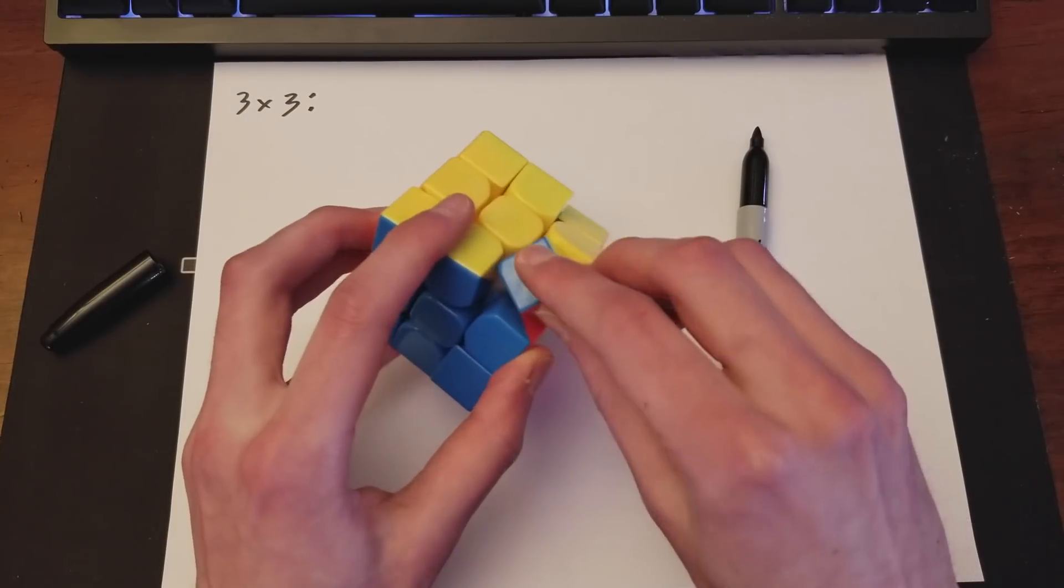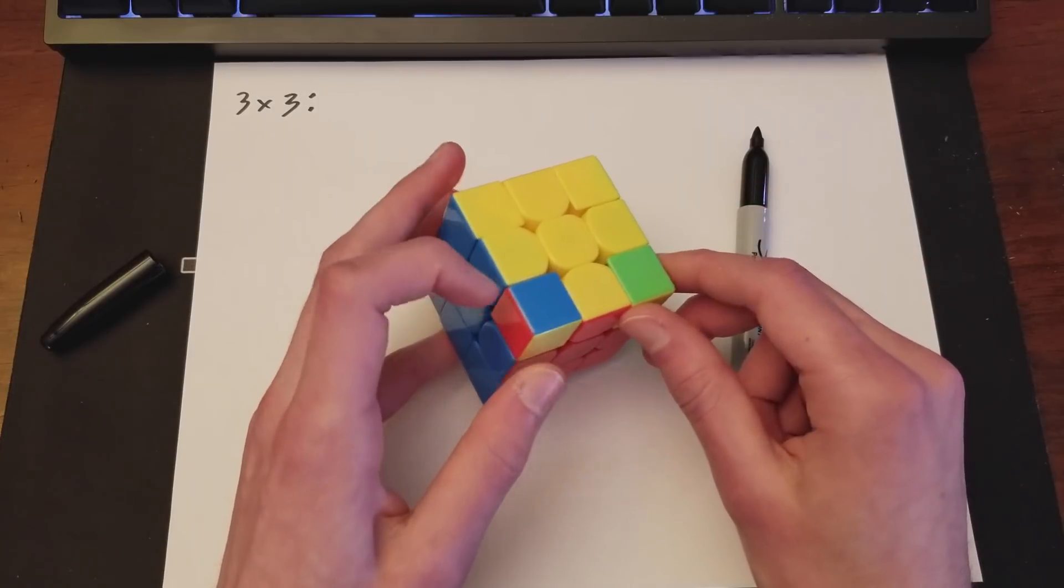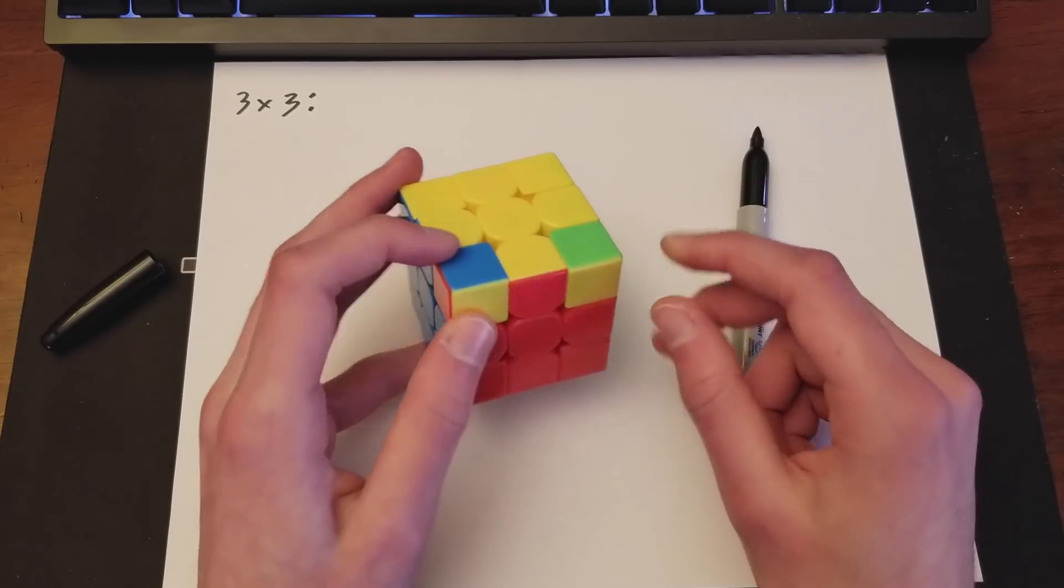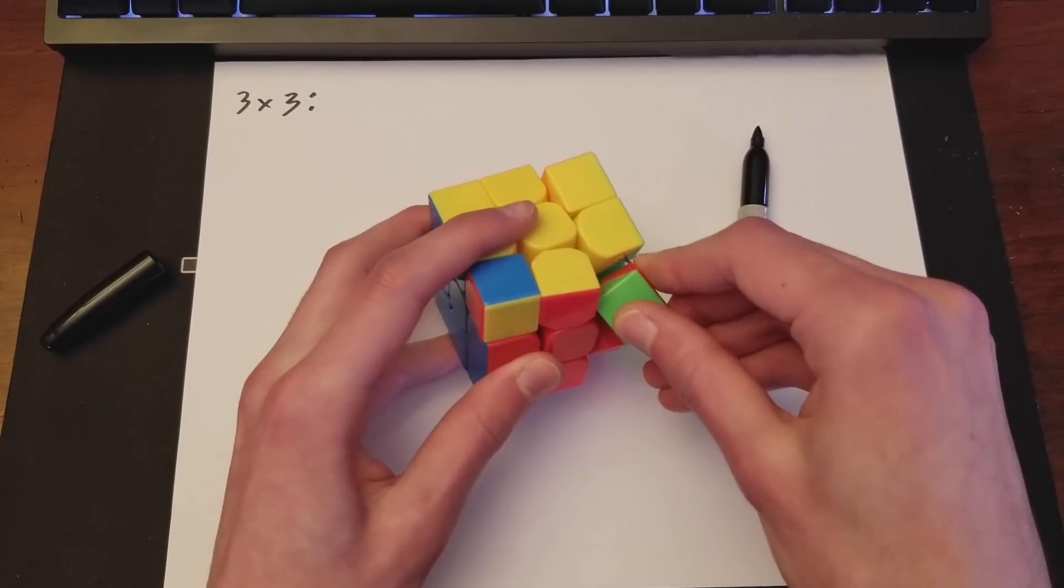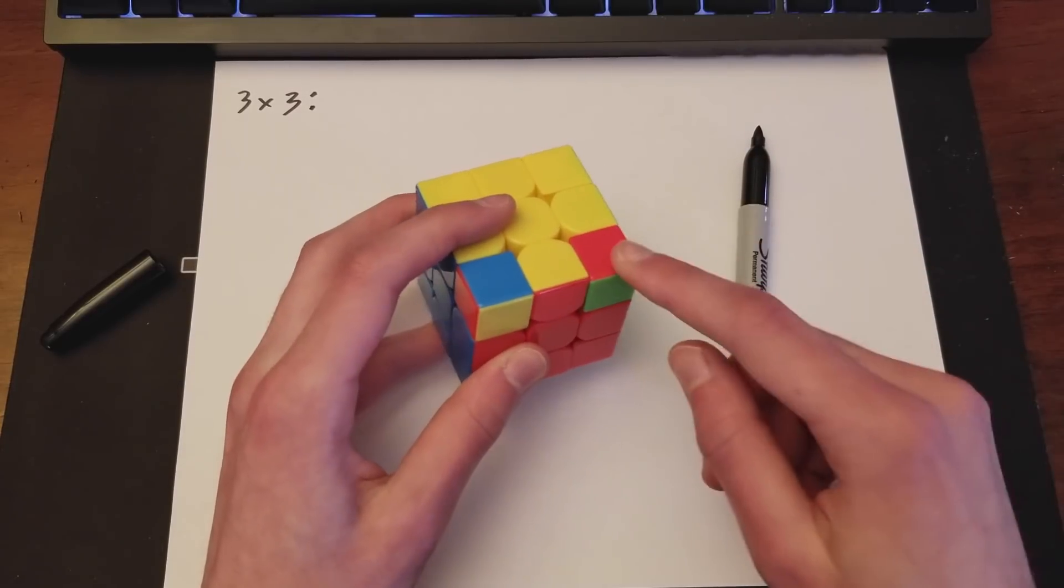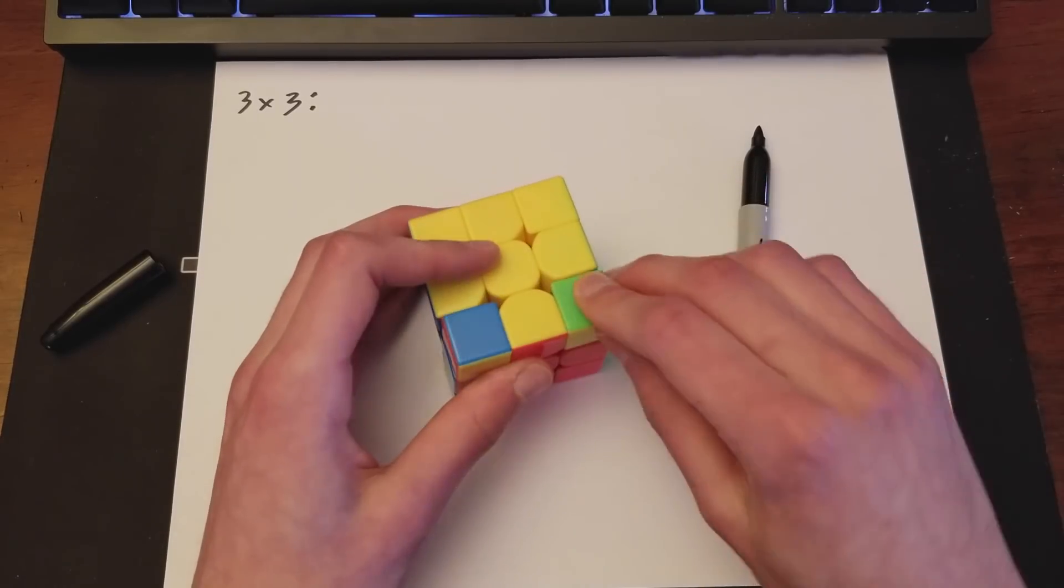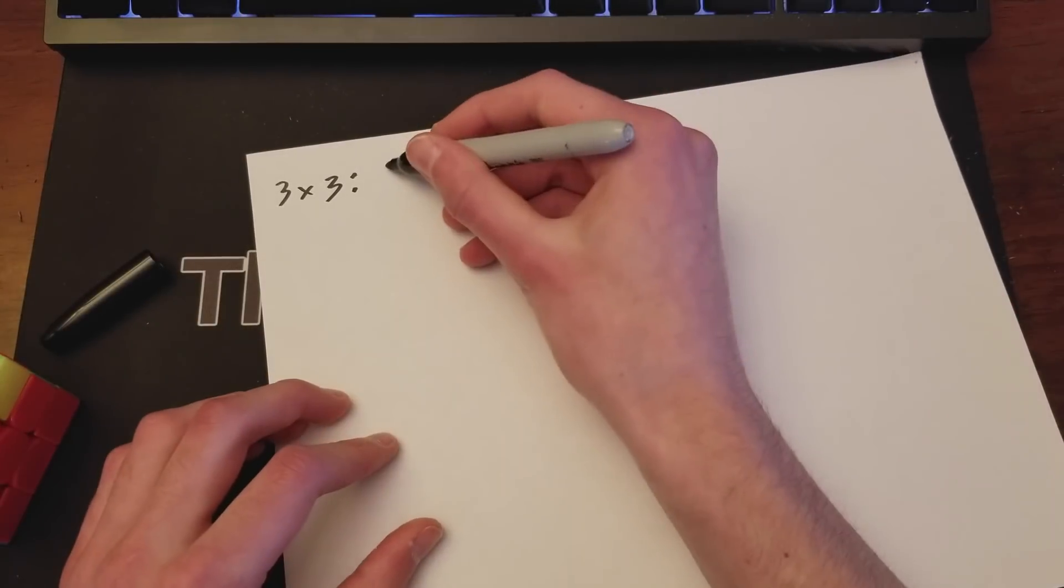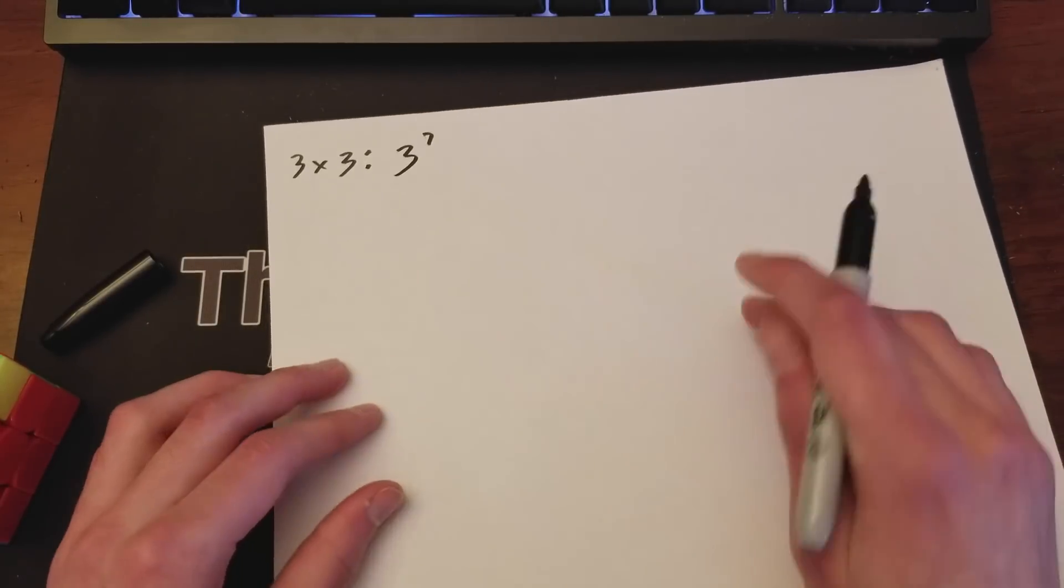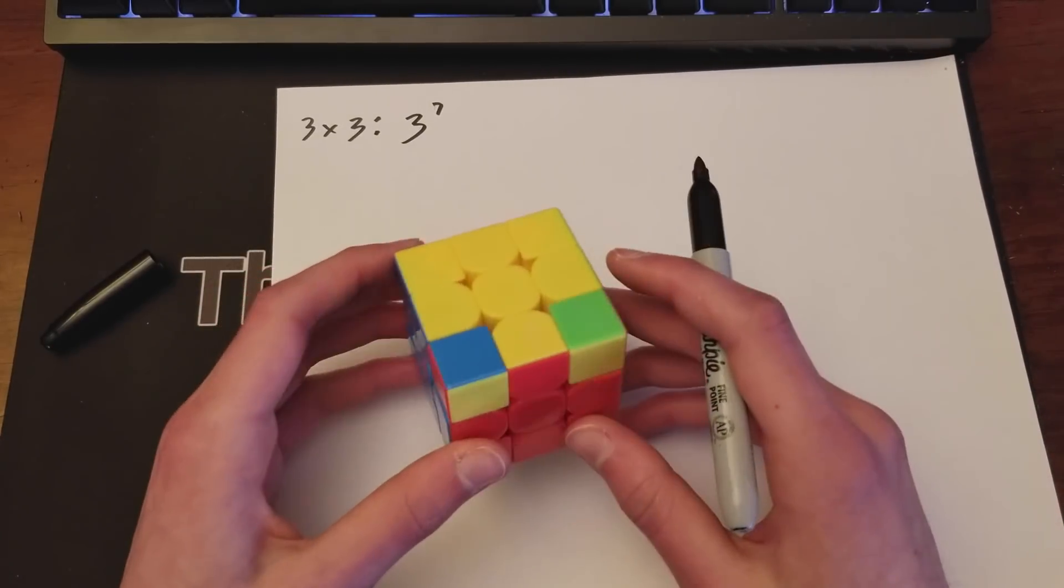So corners can be oriented three different ways. Solved and then like this or like that. So for each one, you've got three different orientations. But one thing you need to know is the orientation of the last corner solved solely relies on the orientation of the second to last.